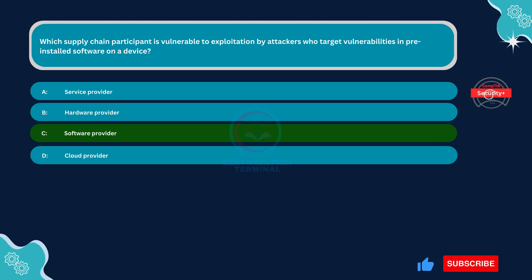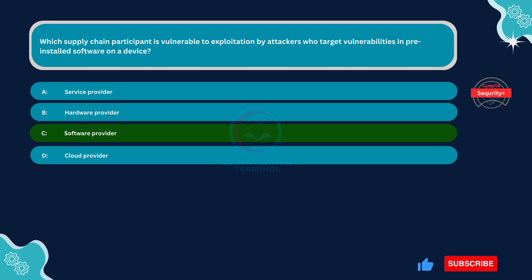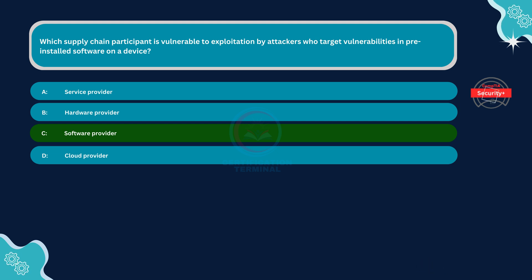Software providers develop and distribute software products, including pre-installed software on devices. Attackers target vulnerabilities in this pre-installed software to exploit security weaknesses and gain unauthorized access or control over devices. Therefore, software providers are vulnerable to exploitation by attackers who target vulnerabilities in pre-installed software.